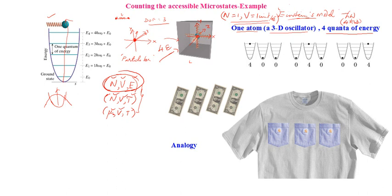The current macrostate is: one particle in a unit cubical box with four quanta of energy. Now the question is: how can this four quanta of energy be distributed by the single particle? Even this simplest system of a single atom behaving as a three-dimensional oscillator can distribute energy in different ways. A schematic diagram is used to represent the energy level diagram with triplets, showing energy contributions along x, y, and z directions.